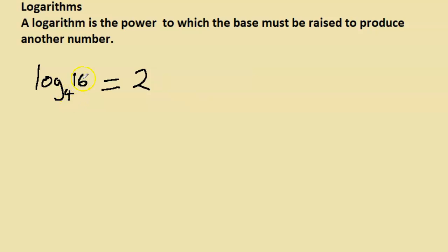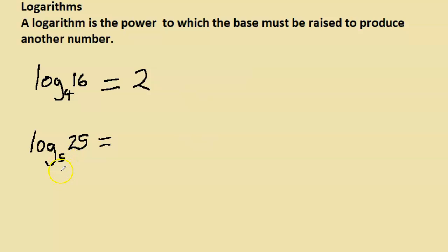Let's do another example: log 25 base 5. You ask yourself, what power do I need to raise the base 5 in order to get 25? That's 2. So log 25 base 5 is the power to which 5 must be raised to get 25, and the answer is 2.